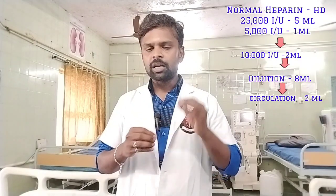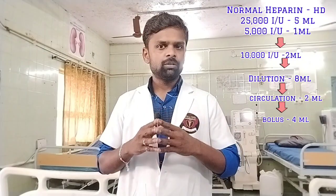For recirculation priming, use 2 ml which equals 2,000 units. For the bolus dose, use 4 ml which equals 4,000 units. After dialysis starts, additional doses of 1,000 units are given at intervals.